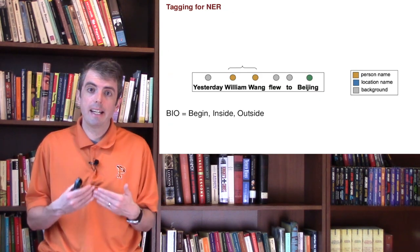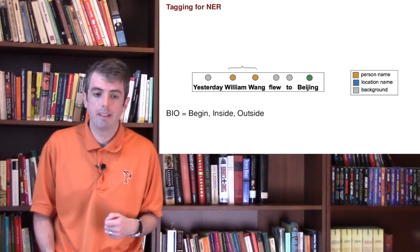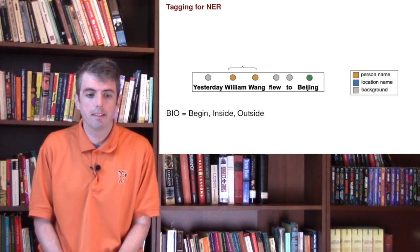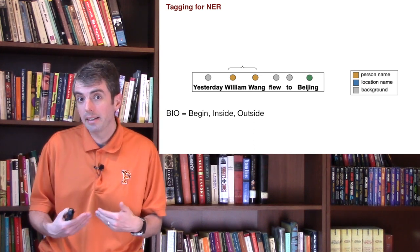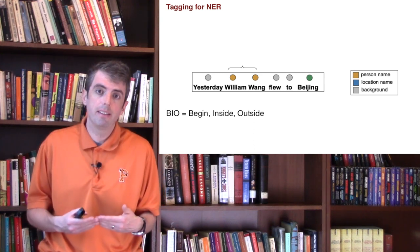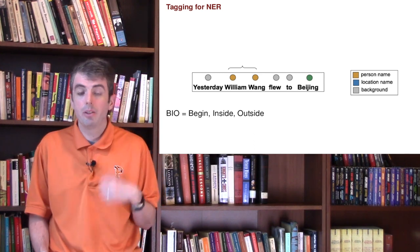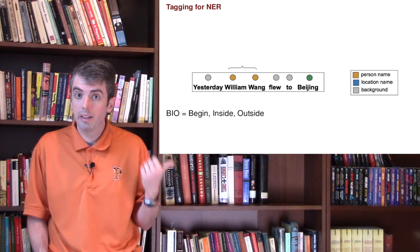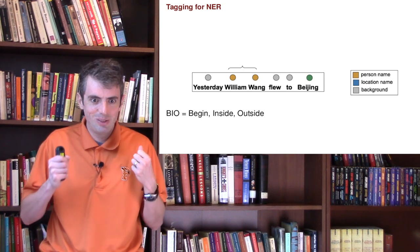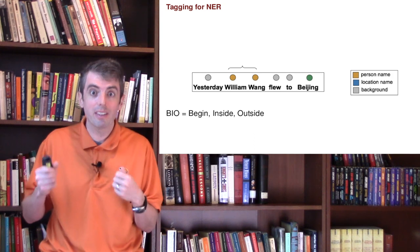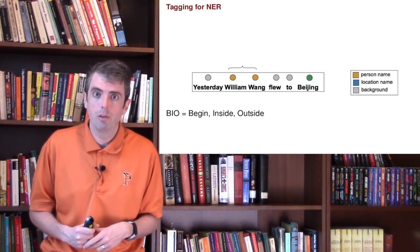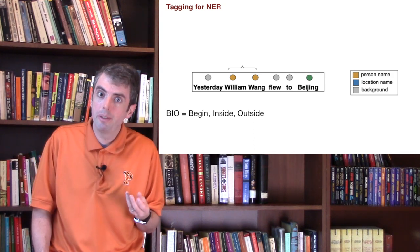So let's see what the tagging task would look like for named entity recognition. Let's say that you have a piece of text that looks like this. One thing that makes this task a little bit harder is that sometimes you have named entities that span multiple tokens. So you can't just say William is a person and Wong is a person — you need to say that they're not two different people; they're the same person, and the name spans two tokens.